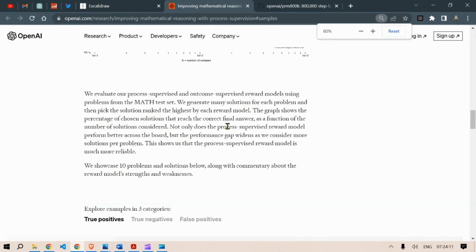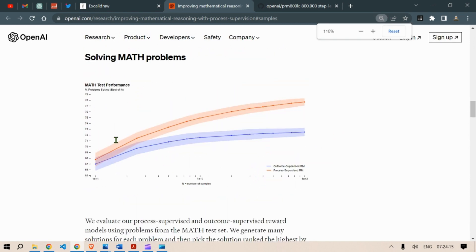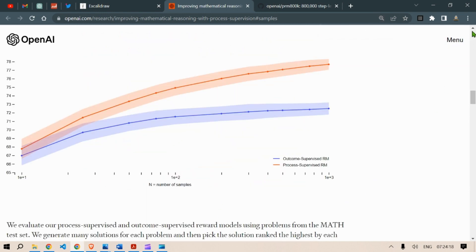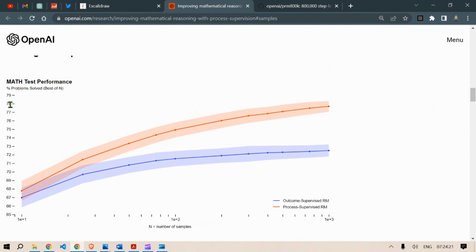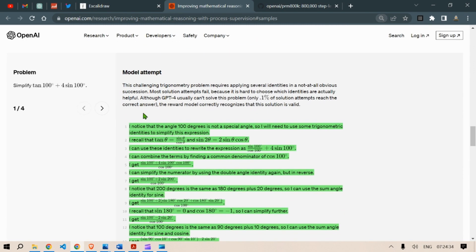Now, we can see here, if we use process supervision, we can see a much higher output, about 78% of the math problem has been solved. On the outcome supervised RM, we see a lesser percentage of math problem being solved. Let's look at an example.